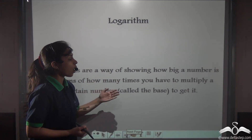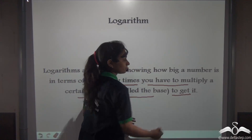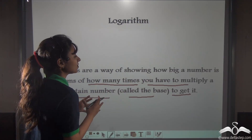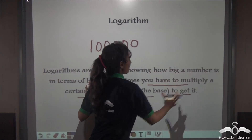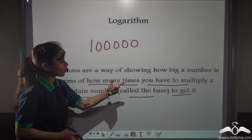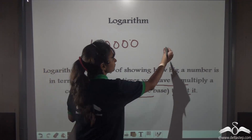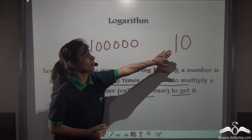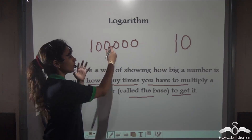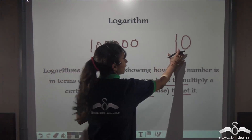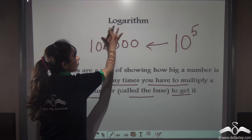Logarithms are a way of showing how big a number is in terms of how many times you have to multiply a certain number called the base to get it. Let us take a big number, say 1 lakh. Suppose this is the big number and this needs to be shown how many times you have to multiply a certain number to get it. I can see that this can be expressed as a power of 10. How many times do you have to multiply 10 with itself to get this big number? 1, 2, 3, 4, 5. Counting zeros is very easy. So 10 to the power 5 is actually 1 lakh. Logarithms actually tell you how to express such big numbers in this form.